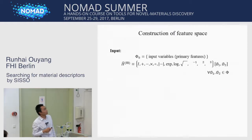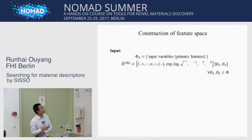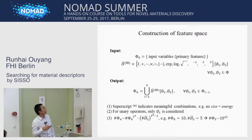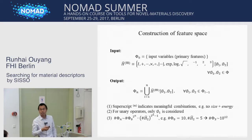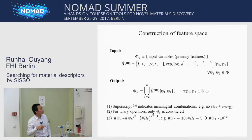Here I show you how we construct a feature space. First, we need input of an initial feature space phi_0, which contains input variables, or what we call primary features. We also need an operator set, so that we can transform the basic variables to expand the feature space. The output is phi_n. We apply the operator set to phi_0 to get phi_1, apply it to phi_1 to get phi_2, and so on. For phi_n, we take the union of feature spaces from phi_0 to phi_{n-1}. The script m indicates meaningful combinations — for example, we don't add size plus energy. For unary operators such as log or exponential, they only apply to phi_1.